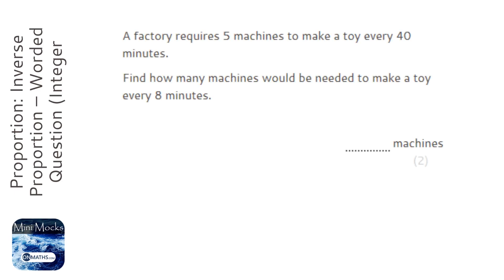Okay, so in this question you might think that to get the answer to this, you do 40 divided by 5 to get 8, so you divide that by 5 and you get one machine. The problem is that doesn't make any sense.